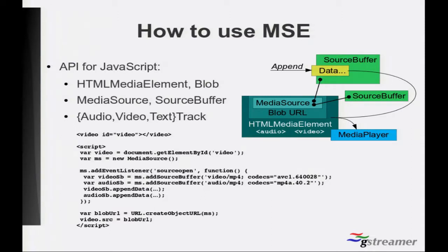So when the event is called, our function is executed, and this function tells the MediaSource to create two SourceBuffers — one of a certain type, and another of another type. And then you can issue several calls to each of those SourceBuffers, to the appendBuffer function, and supply the data. This data is usually stored as a byte array. There is a type that can hold byte arrays, so you can fill that array with whatever you want — you can synthesize it on your own, or you can fetch it. Then you get the array from that request and append it to a SourceBuffer.